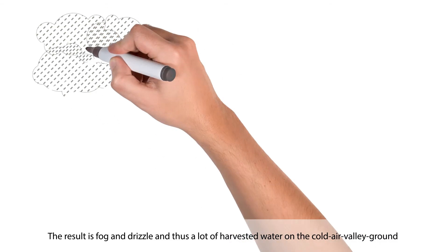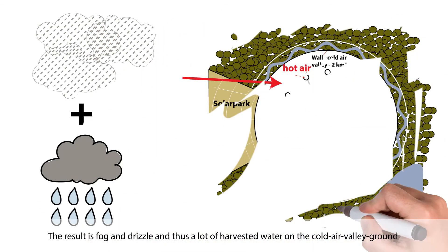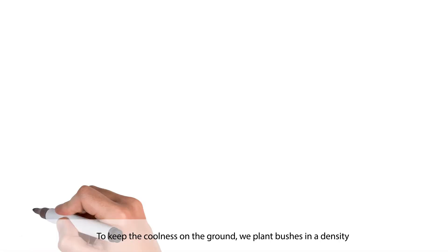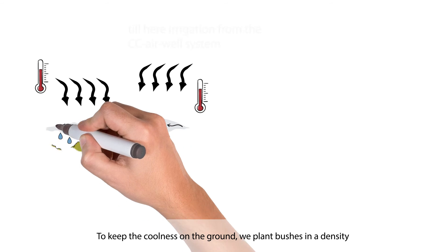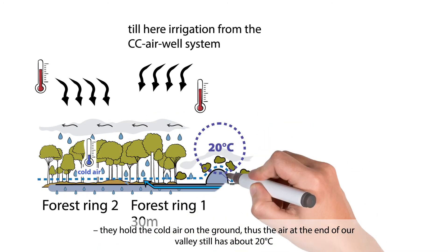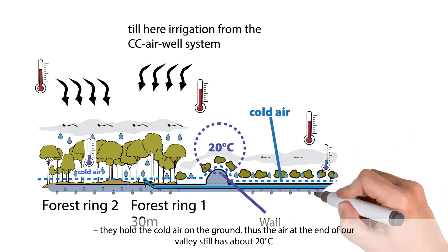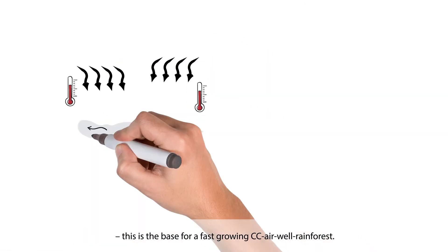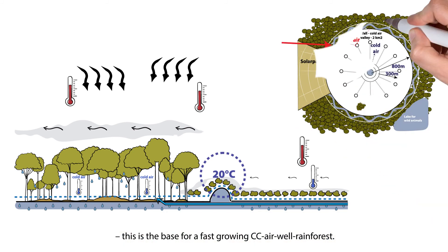The result is fog and drizzle, and thus a lot of harvested water on the cold air valley ground. To keep the coolness on the ground, we plant bushes densely. They hold the cold air on the ground, thus the air at the end of our valley still has about 20 degrees centigrade and flows over the valley wall in the Rainforest Ring 1. This is the base for a fast-growing CC airwell rainforest.